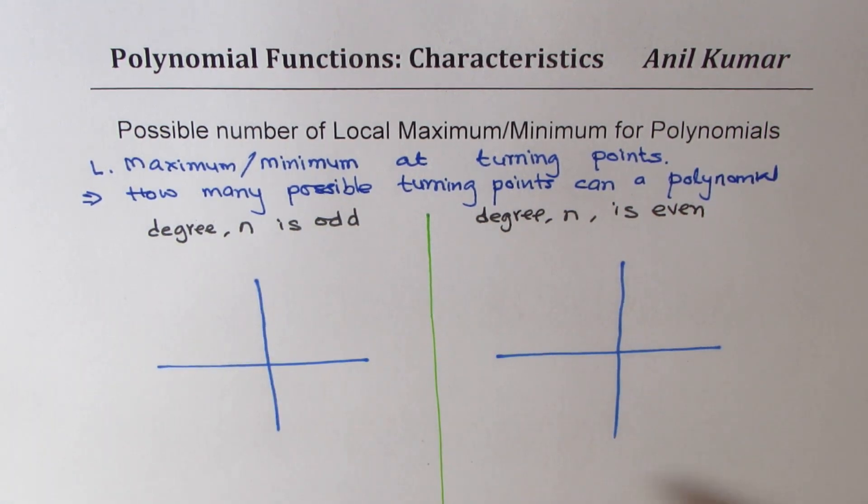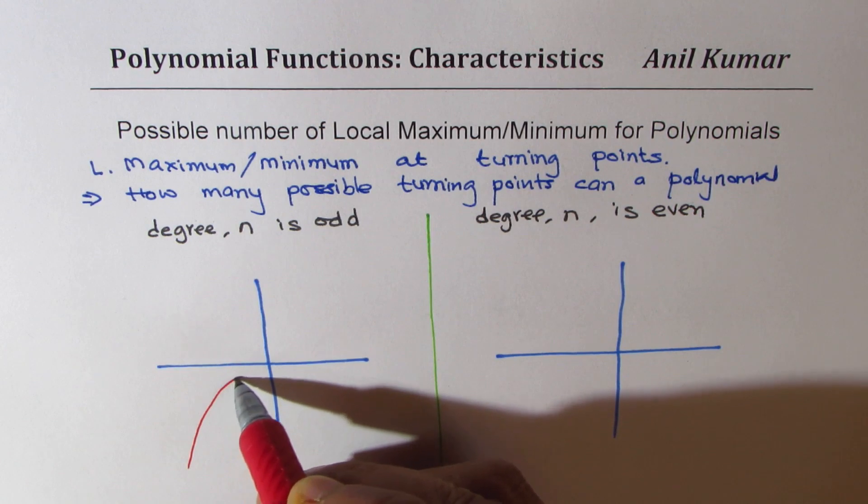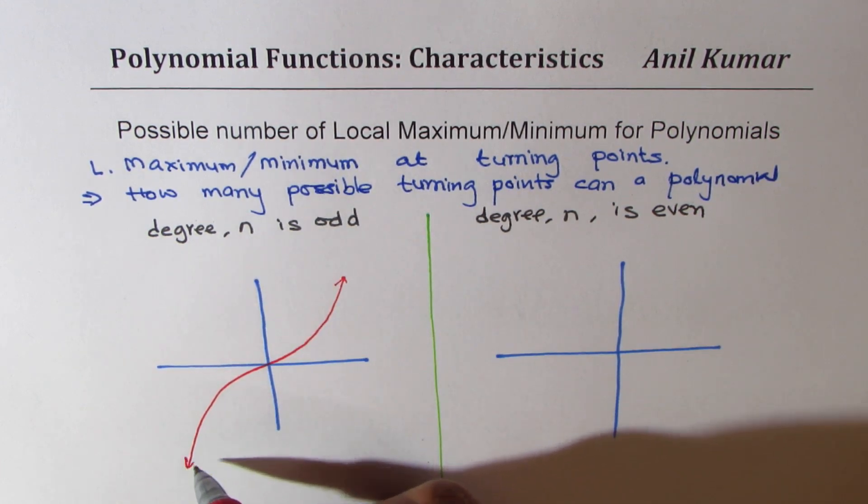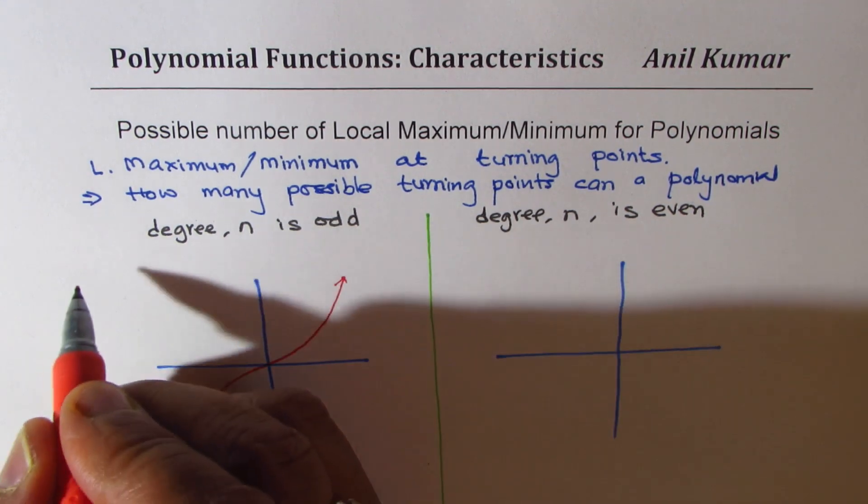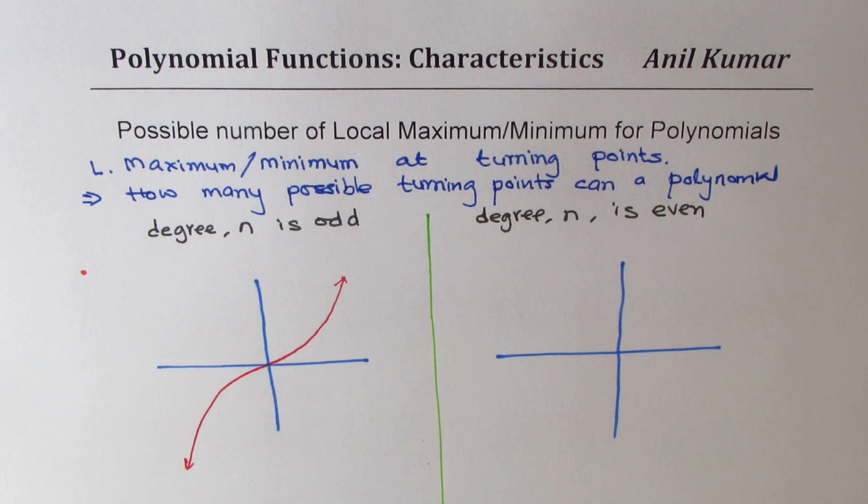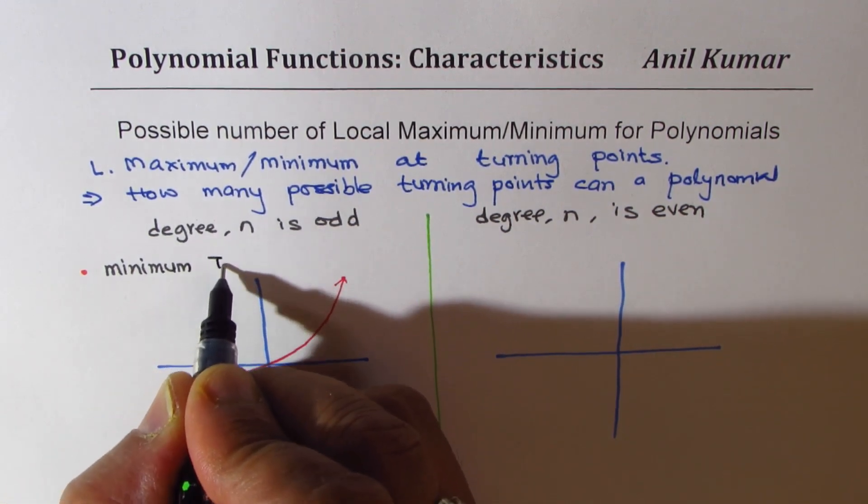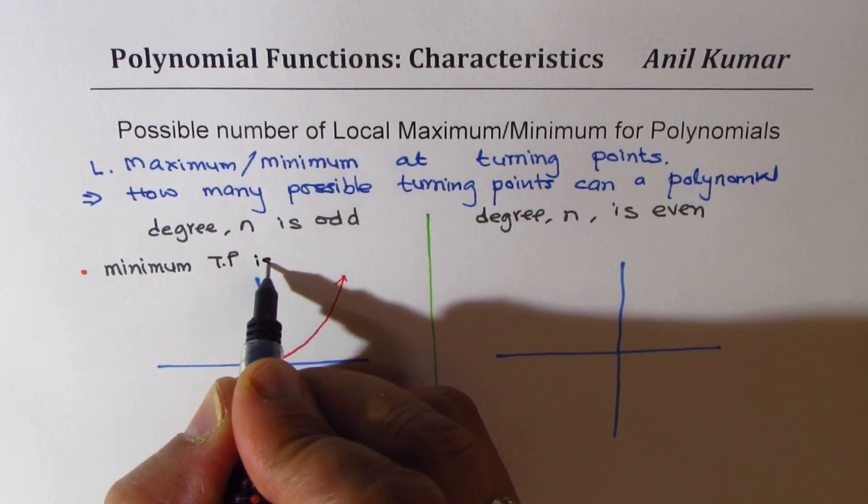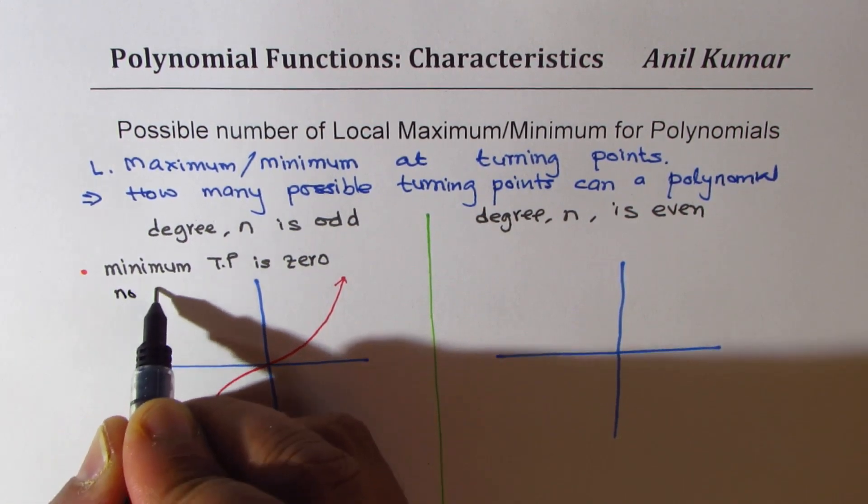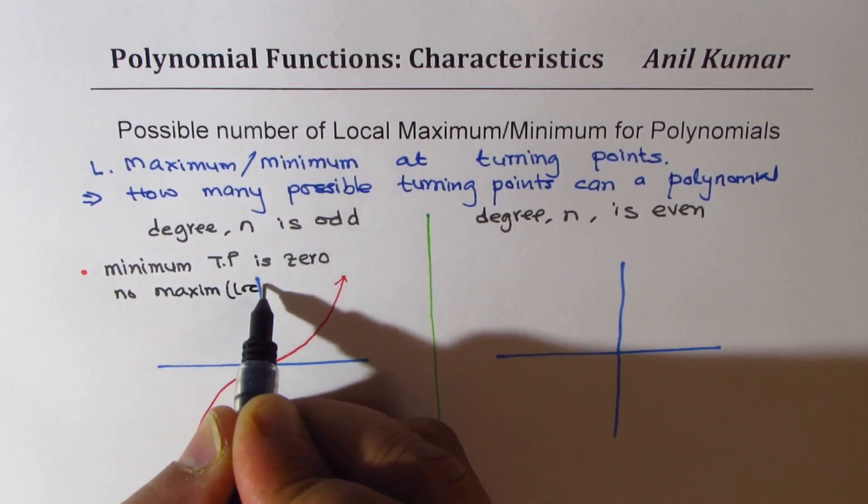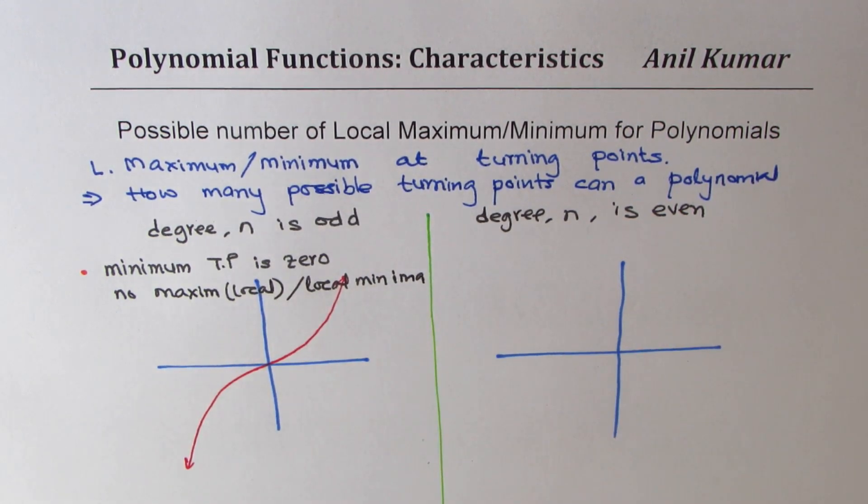For an odd degree polynomial, it has to go diagonally. So in that case, it could go without even turning. Since it doesn't turn, we could say that the minimum number is 0. So we can say that minimum turning points, let's say TP, is 0. That means it could have no maxima, I mean local, or local minima. So that is minimum.